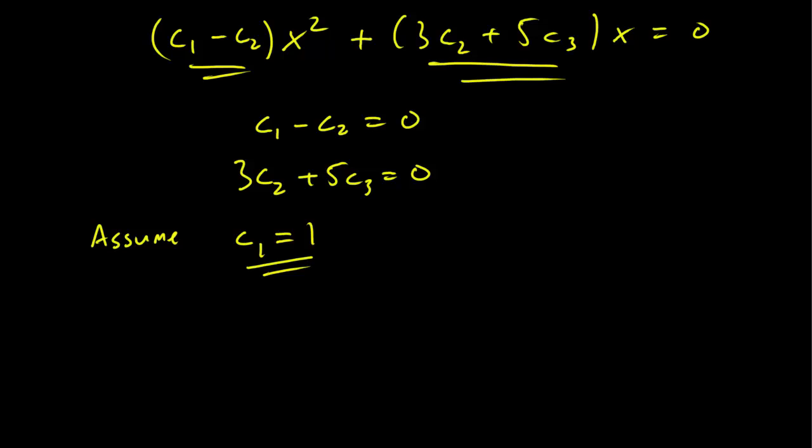Then we can see that from the first equation that c2 must equal 1 as well. And then we use the third equation to show that 3 plus 5 c3 equals zero, or c3 equals minus 3 over 5.